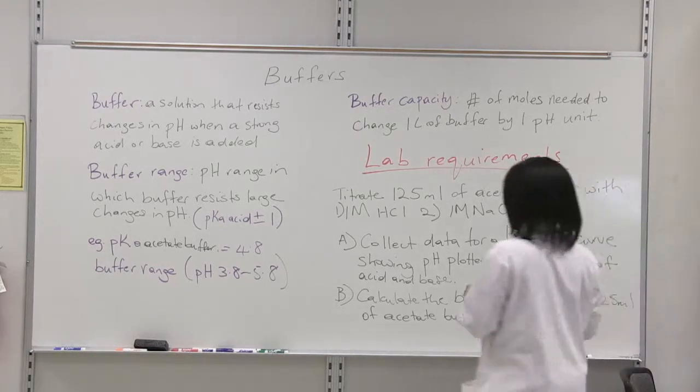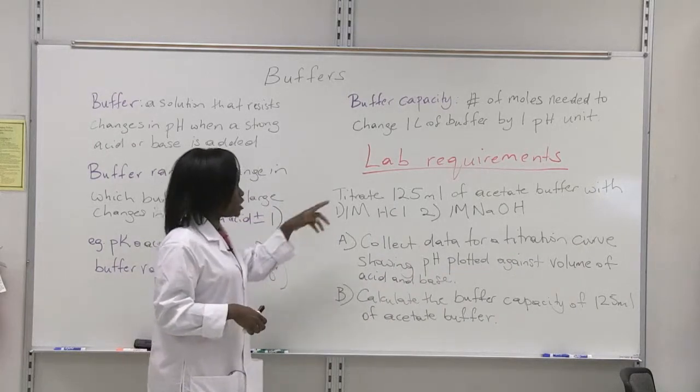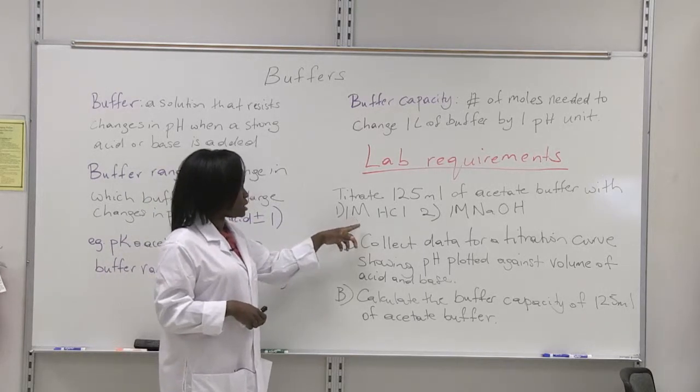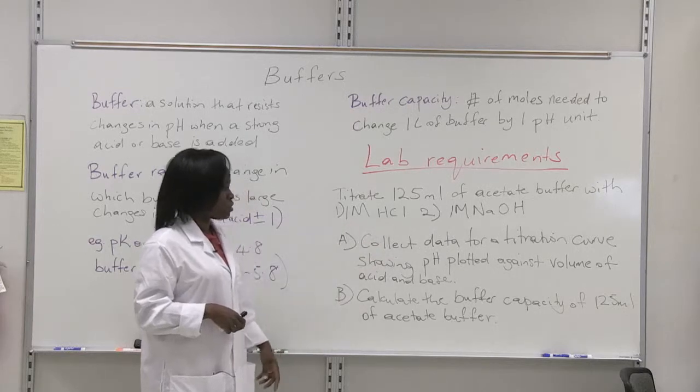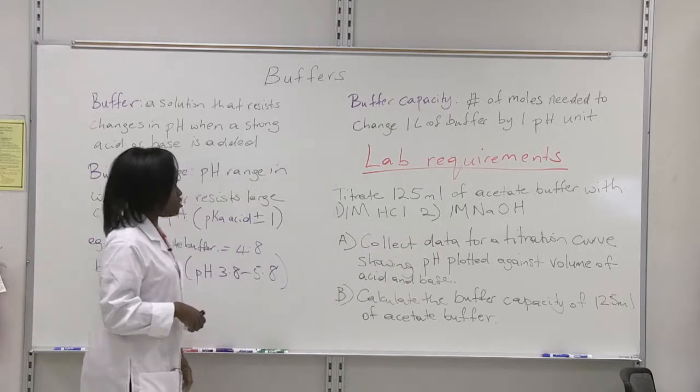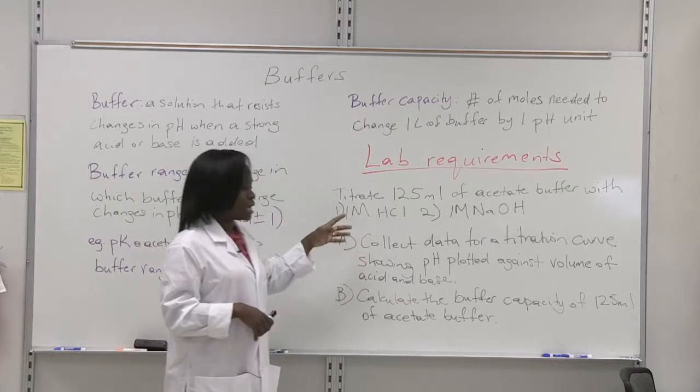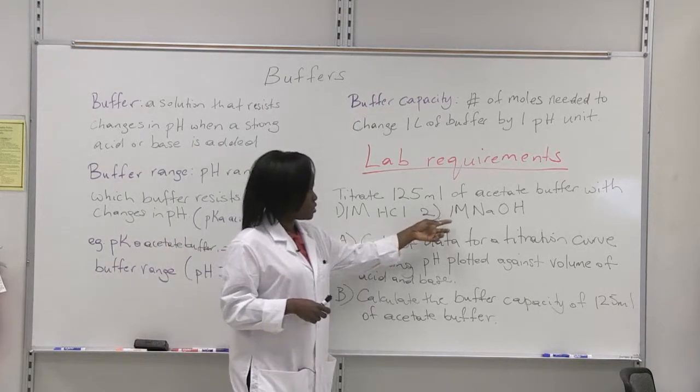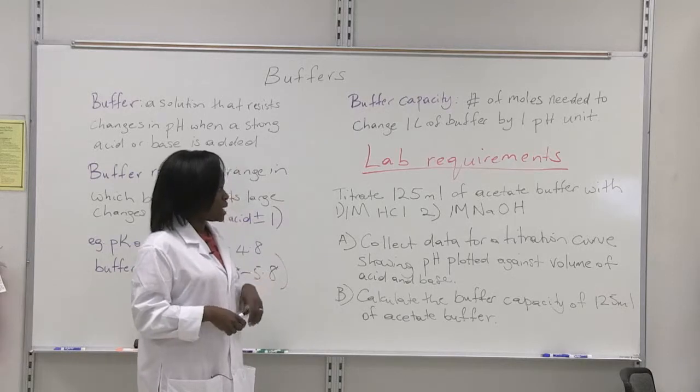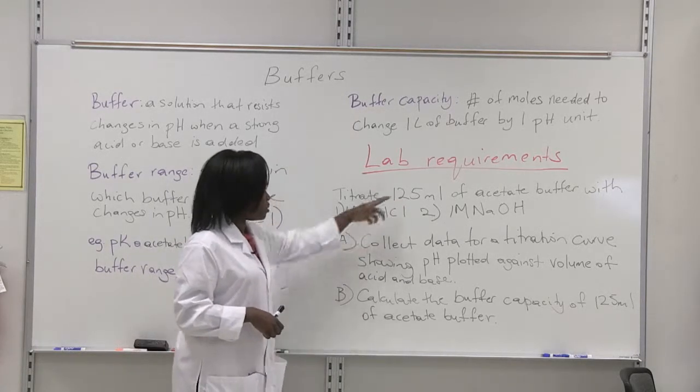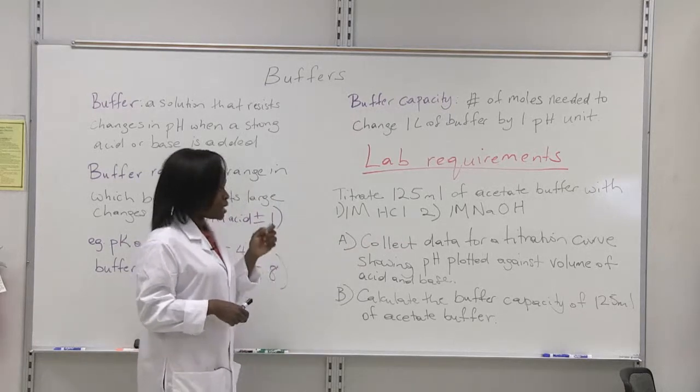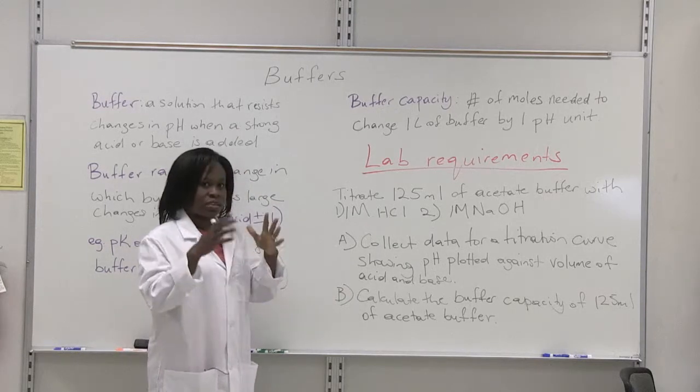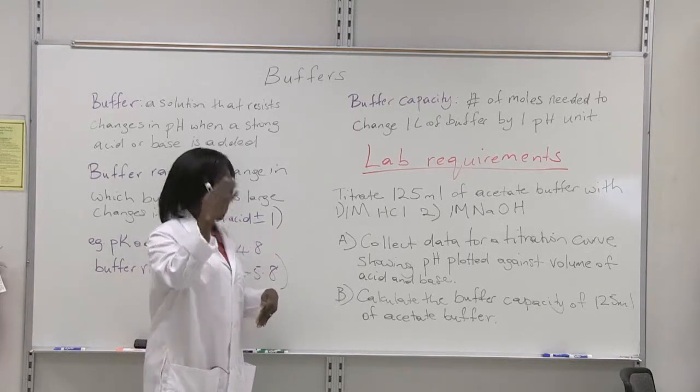This is what you're going to be required to do. You're going to titrate 125 mL of your acetate buffer with one molar hydrochloric acid or one molar sodium hydroxide. You're going to be using your burette. Each time you add a small amount of your base or acid, you're going to record the pH readings so that you'll get a series of data with increased pH versus increased volume.